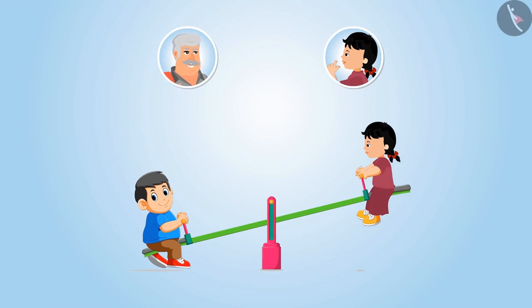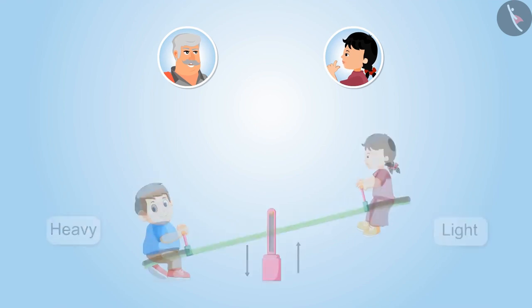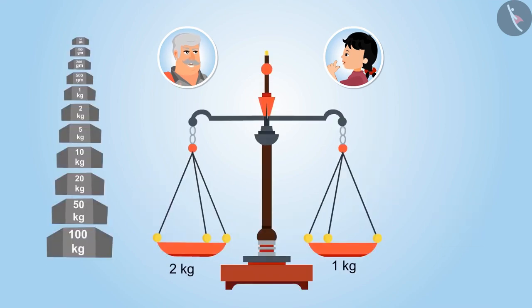Remember, when you swing in the seesaw with Shyam, he automatically moves downwards and you move upwards, right? Yes uncle, because Shyam is heavier than me, that's why he moves downwards. Yes, absolutely right. In the similar way, in this weighing scale, the side carrying more weight moves downwards, while the side carrying less weight moves upwards, because it is lighter than the other.